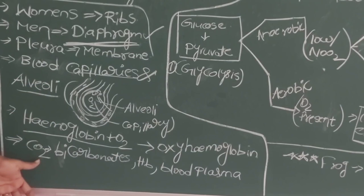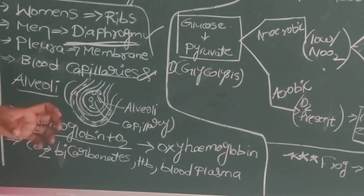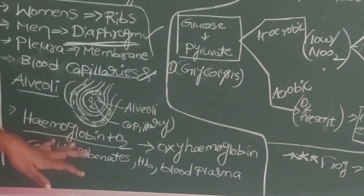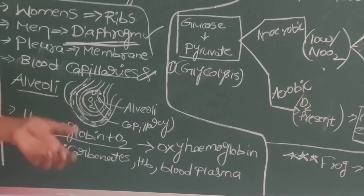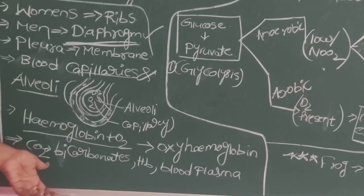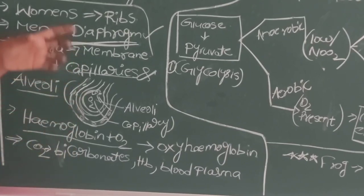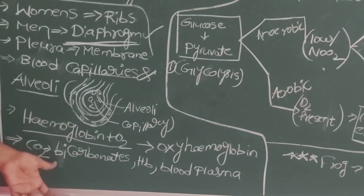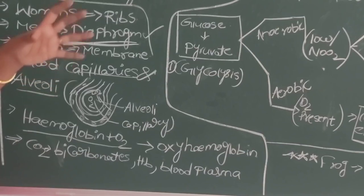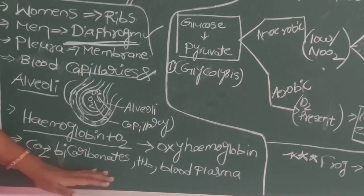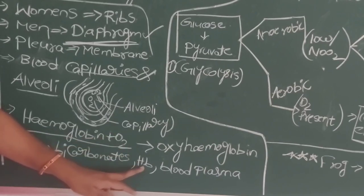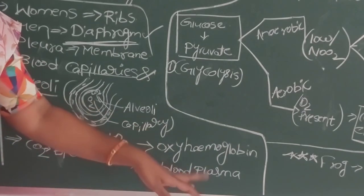Hemoglobin does not only combine with oxygen — it also combines with CO2. Hemoglobin shows more affinity towards oxygen, so it transports more oxygen, but it transports both oxygen and CO2. For CO2 transport: most of the CO2 is transported in the form of bicarbonates, some amount is combined with hemoglobin, and a small remaining amount is dissolved in the blood plasma.